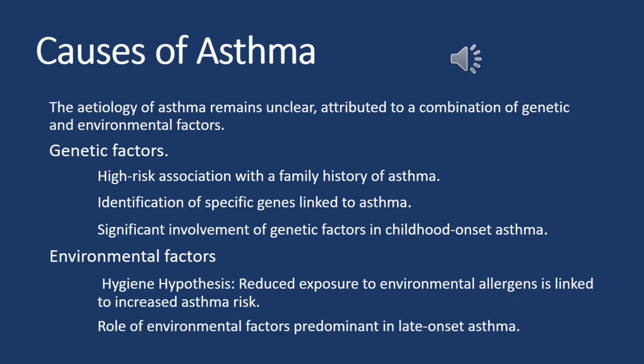Causes of asthma: the etiology of asthma remains unclear, attributed to a combination of genetic and environmental factors. Genetic factors include a high-risk association with a family history of asthma, identification of specific genes linked to asthma, and significant involvement of genetic factors in childhood-onset asthma. Environmental factors include the hygiene hypothesis, where reduced exposure to environmental allergens is linked to increased asthma risk, with environmental factors predominant in late-onset asthma.